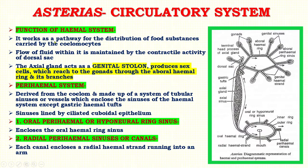The haemal system works as a pathway for the distribution of food substances carried by the coelomocytes. Flow of fluid within it is maintained by the contractile activity of the dorsal sac. The axial gland also acts as a genital stolon — it produces sex cells which reach the gonads through the aboral haemal ring and its branches. In Asterias and most echinoderms, gonads do not produce sex cells; they are produced by the axial gland. Next is the perihemal system, which is derived from the coelom and is made up of a system of tubular sinuses or vessels enclosing the sinuses of the haemal system.